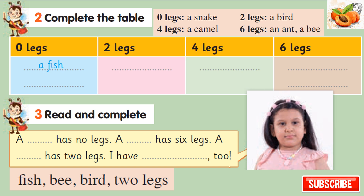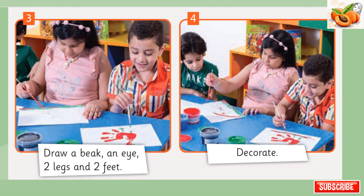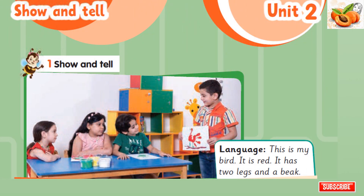Read and complete: A fish has no legs. A bee has six legs. A bird has two legs. I have two legs. Project: A handprint bird. 1. Paint your hand. 2. Make a handprint. 3. Draw a beak, an eye, two legs, and two feet. 4. Decorate. Show and tell: This is my bird. It is red. It has two legs and a beak.